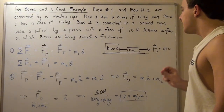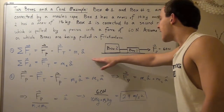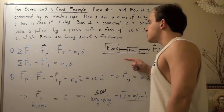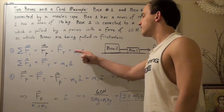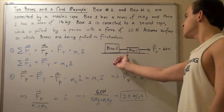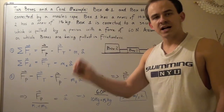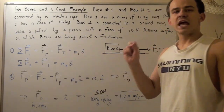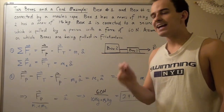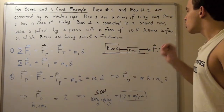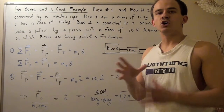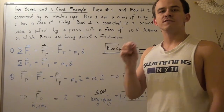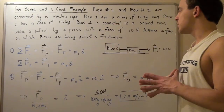To begin, let's define this as our x-axis. Going to the right is positive and going to the left is negative. So if any force is pointing to the right, that force has a positive direction, and if any force is pointing to the left, that force has a negative direction. Now let's find all the forces acting on each object.